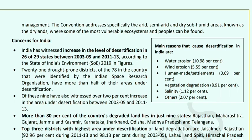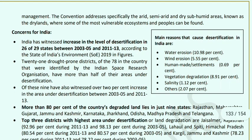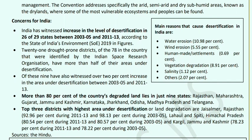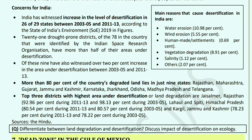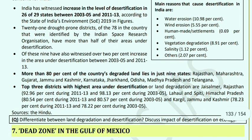Concerns for India: India has seen desertification growing in 26 states between 2003–2005 and 2011–2013, according to the State of India's Environment 2019. The main reasons are water erosion (10.98%), vegetation degradation (8.91%), wind erosion (5.55%), salinity (1.12%), human-made settlements (0.69%), and others (2.07%). ISRO has identified that half the states face desertification, and 9 states saw a 2% increase in area under desertification between 2003–05 and 2011–13.